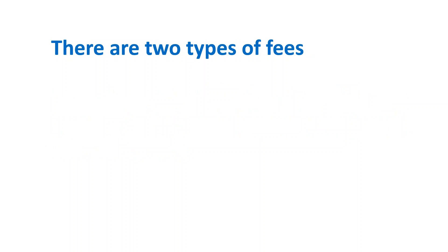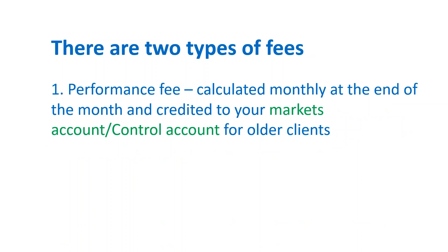There are two types of fees you can charge your client. The first is a performance fee — very standard and based on the performance of either the manager account or the signal provider account. You may want to charge a performance fee of say 10% or 15%. It is calculated monthly at the end of the month. If your starting balance was $10,000 and at month end it was $10,500, you have made $500 profit. If it was a 20% performance fee, that would be 20% of $500, which equals $100, and that $100 will get automatically credited to your markets account or control account for older clients.